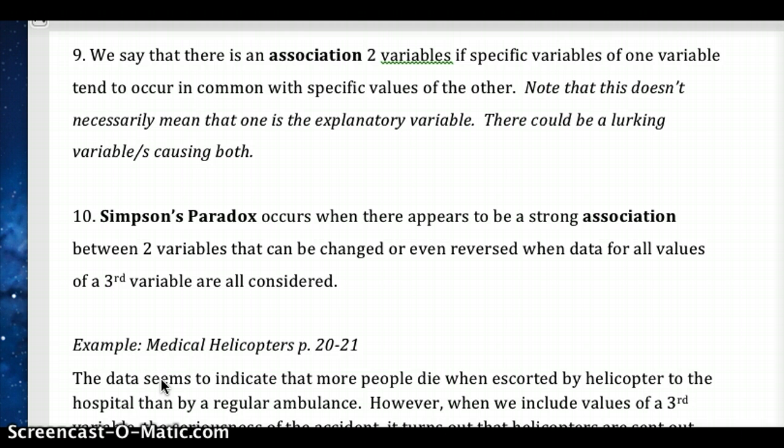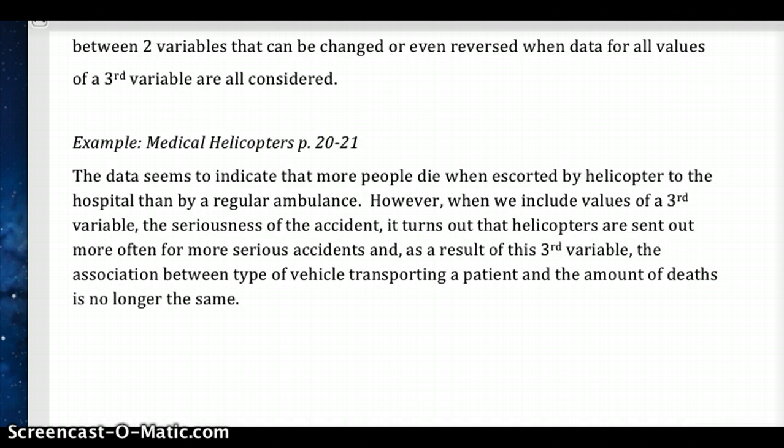Simpson's paradox is something we'll touch on quickly since it's not on the AP test. It involves accounting for a lurking variable—when two variables' values change or reverse when you consider a third variable. The book discusses how helicopter rescues seem to have higher death rates than ambulances. The third variable is incident severity. Helicopters are only called for very severe incidents, which accounts for the higher death rate. This isn't a big focus since it's not on the AP test.